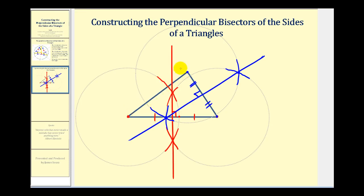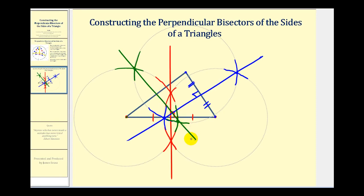Now we have one more side to bisect. We'll put the point of the compass here and swing an arc to the left and right of this side, again with the same radius. It might look something like this, and something like this. Move the point of the compass to the other vertex and do the same — swing an arc to the left and swing an arc to the right. This last perpendicular bisector will pass through the two points of intersection. We have a right angle here and two congruent segments. You can see that the perpendicular bisectors should intersect here at the circumcenter.